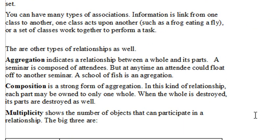Aggregation indicates a relationship between a whole and its parts. For example, a seminar is composed of attendees. Or a school of fish is composed of fish. And so you can see if the fish swims away or if the attendee leaves the conference, or if the conference shuts down, the fish and the attendee still survive.